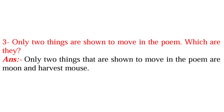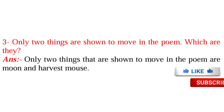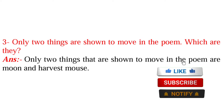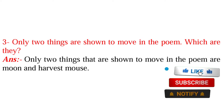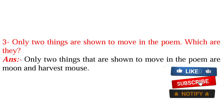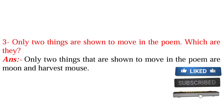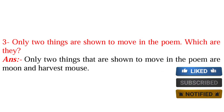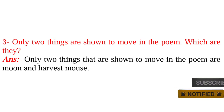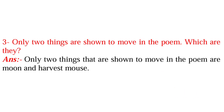The third question is: only two things are shown to move in the poem — which are they? The answer is, the only two things that are shown to move in the poem are the moon and the harvest mouse.